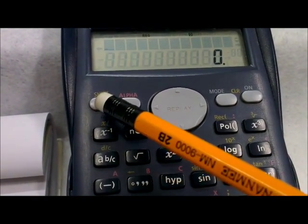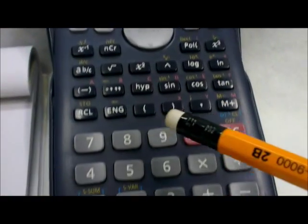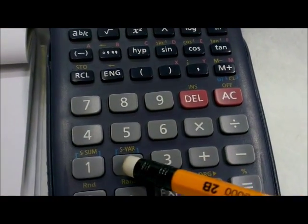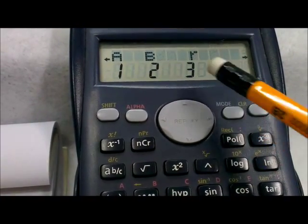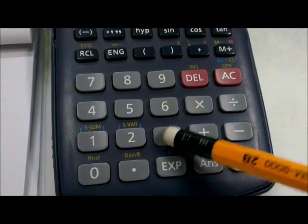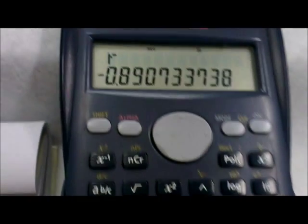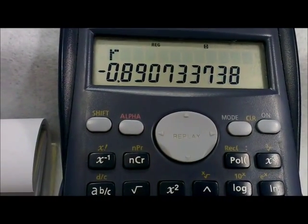Shift. I will show you. Shift 2, arrow, arrow. You see, R is 3. This equals negative 0.8907. This is what we found.